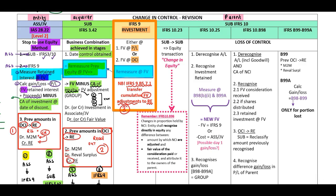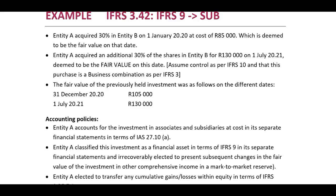Entity A acquired 30% in Entity B on 1 January 2020 at a cost of $85,000, which is deemed to be the fair value on that date. Entity A acquired an additional 30% of the shares in Entity B for $430,000 on 1 July 2021, deemed to be the fair value on this date. The fair value of the previously held investment was $105,000 on 31 December 2020, and $130,000 on 1 July 2021.